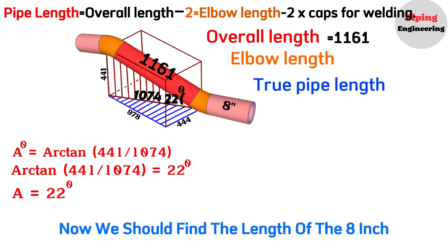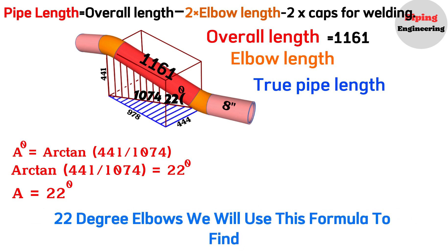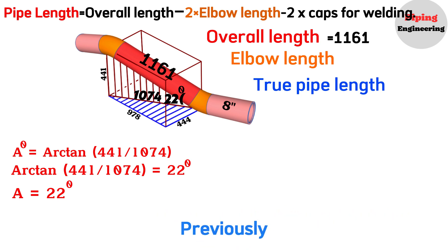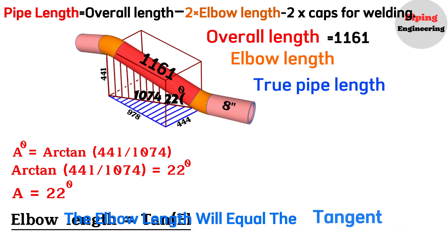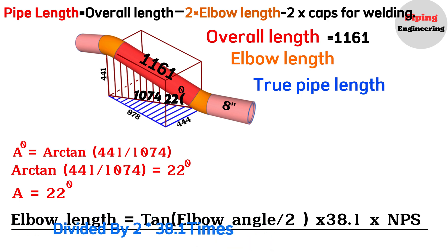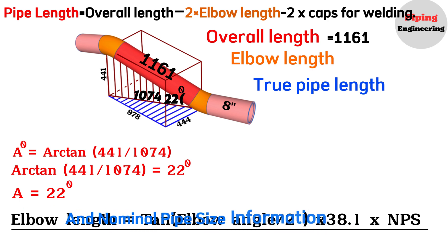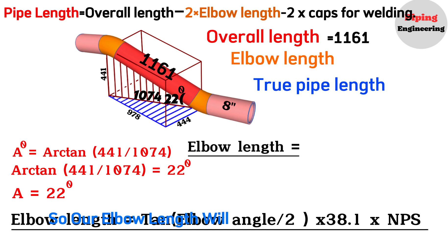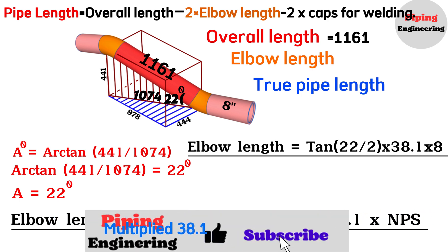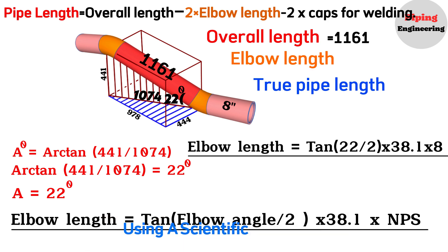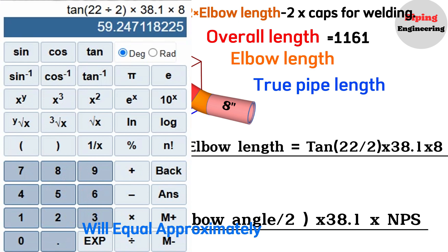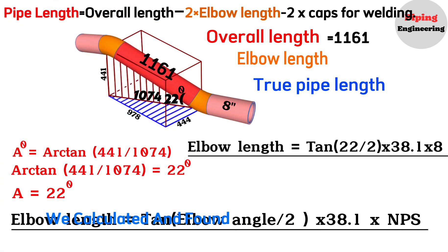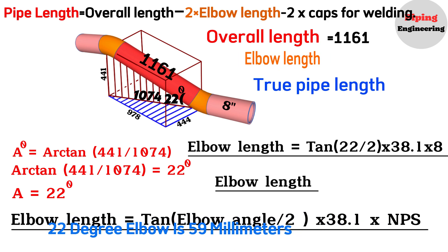Now we should find the length of the 8-inch 22-degree elbows. The elbow length formula equals the tangent of the elbow angle divided by 2, multiplied by 38.1, multiplied by the nominal pipe size (NPS). Substituting our values, the elbow length equals the tangent of 22 divided by 2, multiplied by 38.1, multiplied by 8. Using a scientific calculator, this equals approximately 59 mm. So the length of the 8-inch 22-degree elbow is 59 mm.